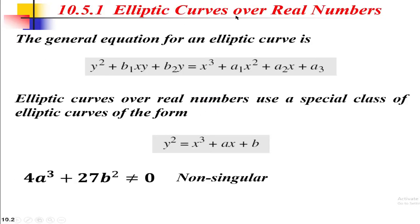Let's move on to the next slide. Here we have elliptic curves over real numbers. This is not directly related to an ellipse, but the equation is similar to the one used to calculate the length of the arc in the circumference of an ellipse. The general equation for an elliptic curve is: y² + b₁xy + b₂y = x³ + a₁x² + a₂x + a₃. Elliptic curves over real numbers use a special class where the equation simplifies to y² = x³ + ax + b. If 4a³ + 27b² ≠ 0, the equation is called a non-singular elliptic curve equation.